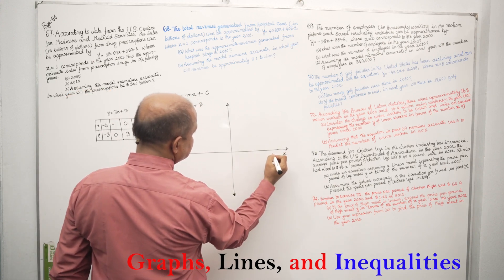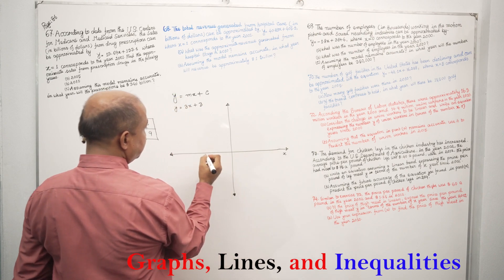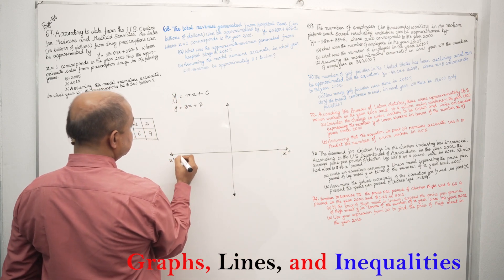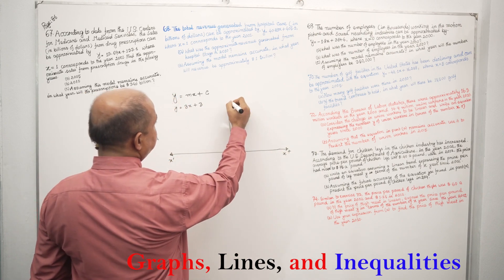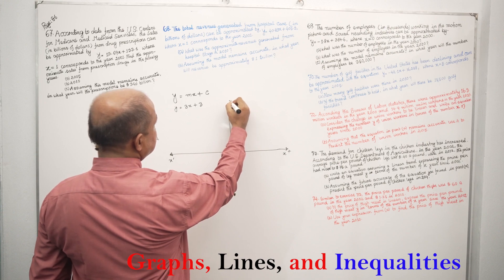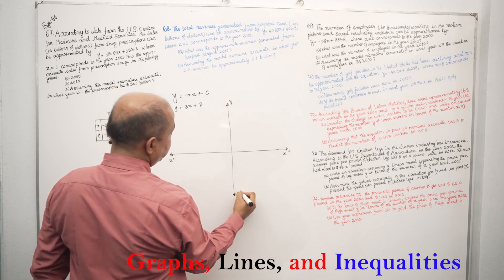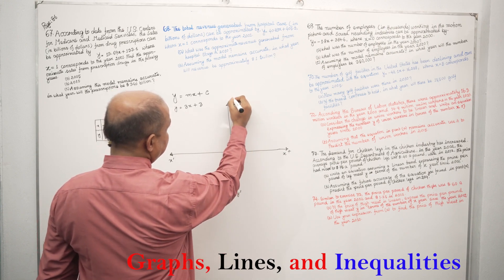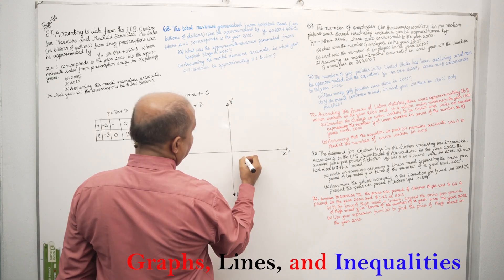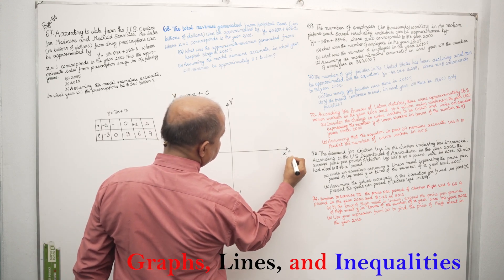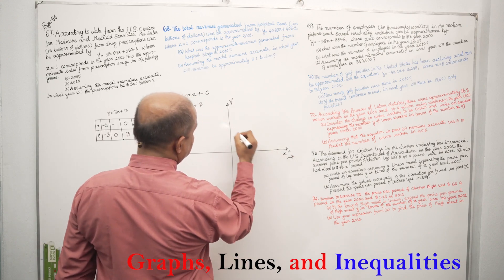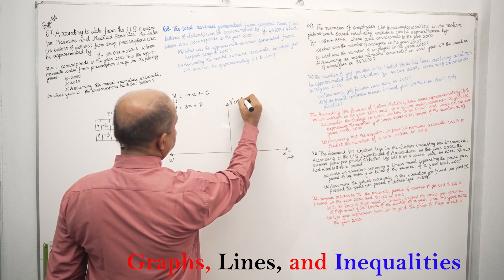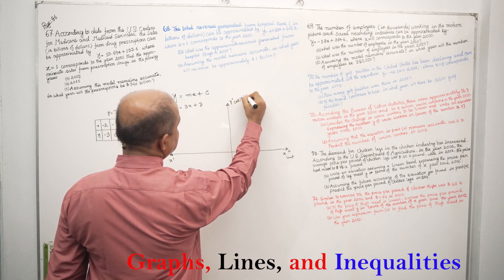This is called the X-axis. If you go to the right it is plus, and to the left it is minus. There is a vertical axis called the Y-axis — upward is plus and downward is minus. The Y-axis is used to write units such as cost, revenue, and price.